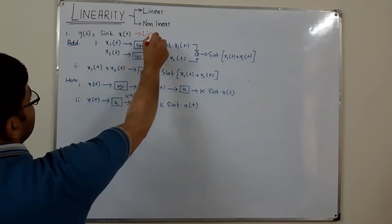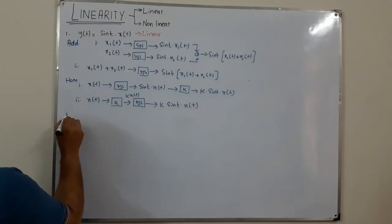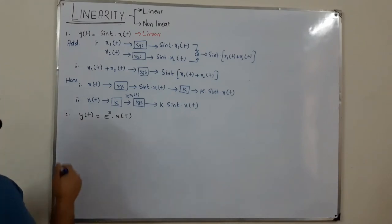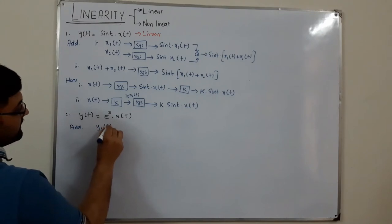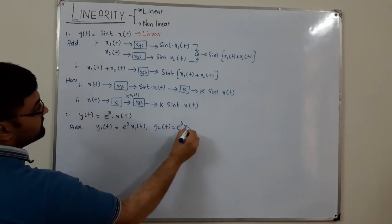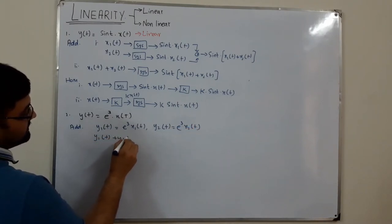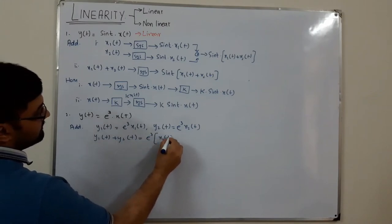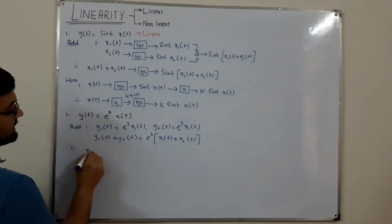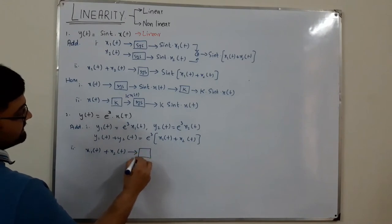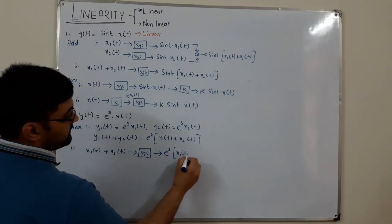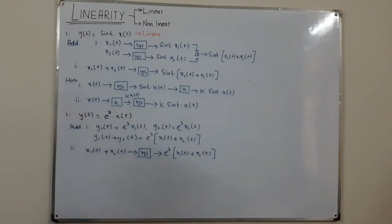Next example: y(t) = e^3·x(t) — a constant coefficient. Checking additivity: y1 = e^3·x1(t), y2 = e^3·x2(t). Adding them: y1 + y2 = e^3·x1(t) + e^3·x2(t). In step two, add inputs first and provide to the system; the system multiplies e^3 by x1(t) + x2(t), giving e^3·[x1(t) + x2(t)]. These two are the same — additivity is satisfied.